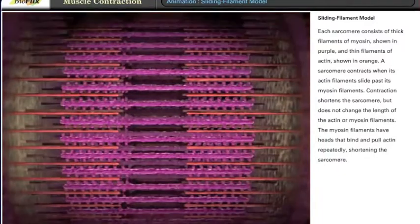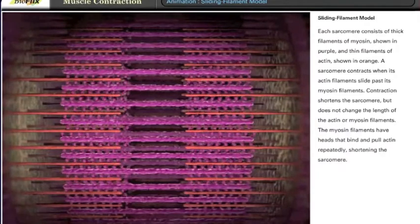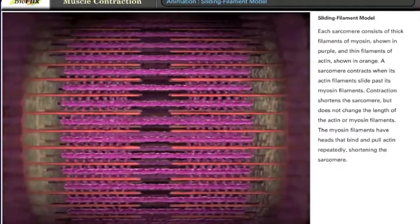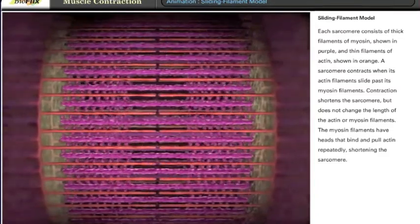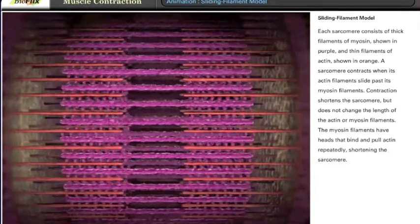Each sarcomere consists of thick filaments of myosin, shown in purple, and thin filaments of actin, shown in orange. A sarcomere contracts when its actin filaments slide past its myosin filaments. Contraction shortens the sarcomere, but does not change the length of the actin or myosin filaments.